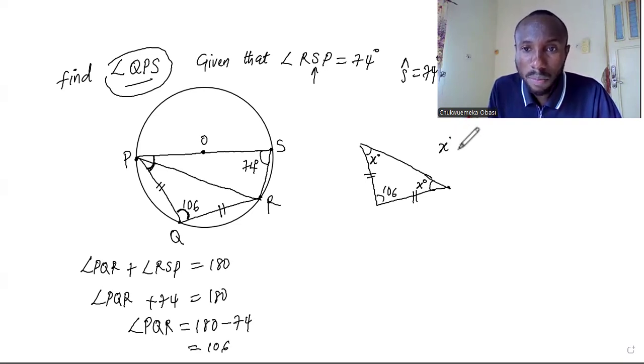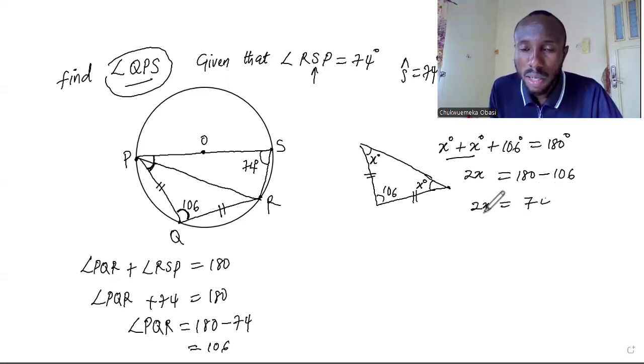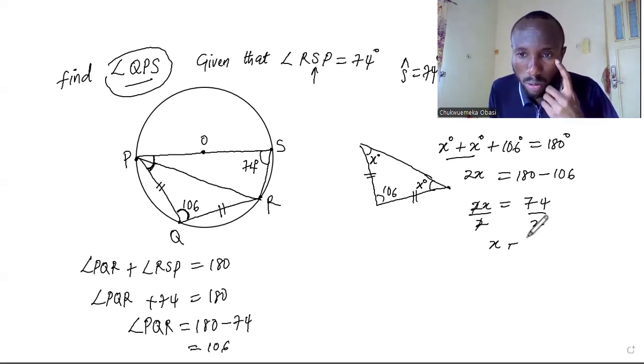So that means X degrees plus X degrees plus the 106 degrees should give me 180 degrees. That's the sum of angles in a triangle. And X plus X is 2X equal to 180 minus 106. And that is 2X is equal to 74, isn't it. And divide everybody by 2, so finally X is just equal to 37.